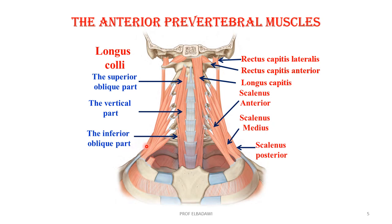That is the muscle here. That is the inferior part. That is the vertical part. And the superior oblique part. That is the longus capitis muscle. And the two recti — rectus capitis lateralis and anterior. And these are the three scalene muscles: the anterior, the medius, and the posterior.